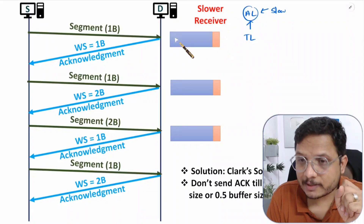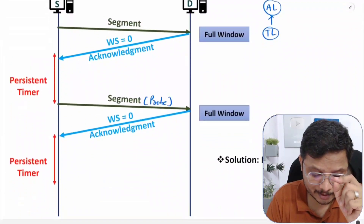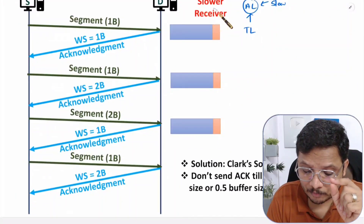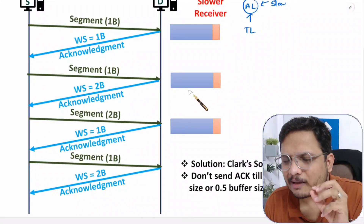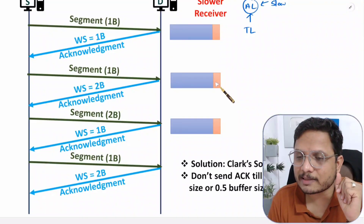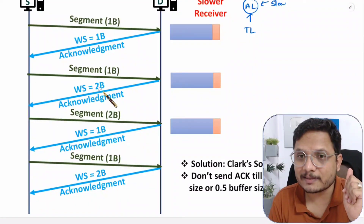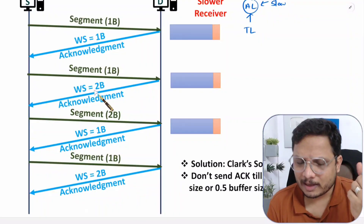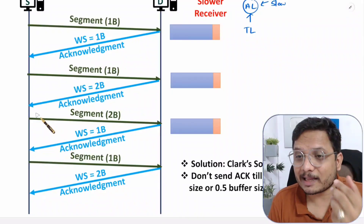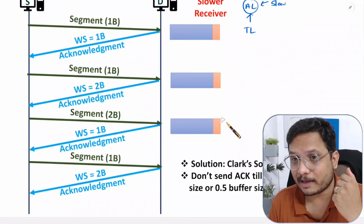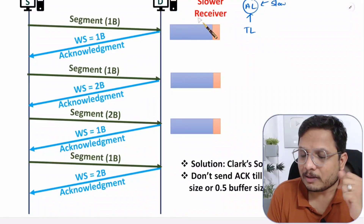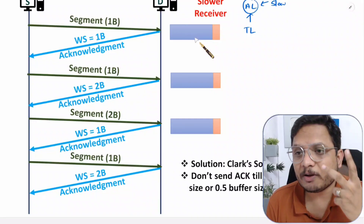Remember, in the case of the persistent timer earlier, we had a full window. But here, because the receiver is slow, the window is not full — it has a little free space. Because of that little free size, the receiver advertises window size as one or two or three bytes, and the sender can only send that amount since it cannot send more data than the free space available at the receiver.